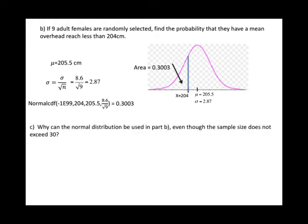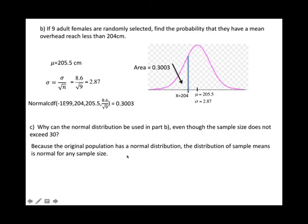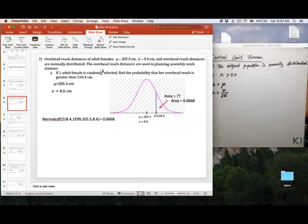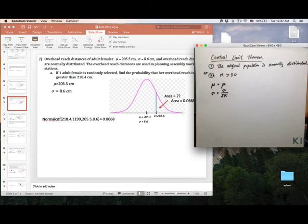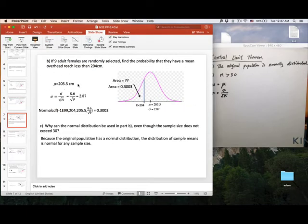Part C: Why can the normal distribution be used in Part B, even though the sample size does not exceed 30? The sample size in Part B is 9. Remember one of the requirements of the Central Limit Theorem is n greater than 30. We can apply it here because the original population has a normal distribution — the distribution of the sample mean is normal for any sample size. The problem states overhead reach distances are normally distributed. When the original population is normally distributed, we don't care about the sample size — we can still apply the Central Limit Theorem, because it's an OR condition.